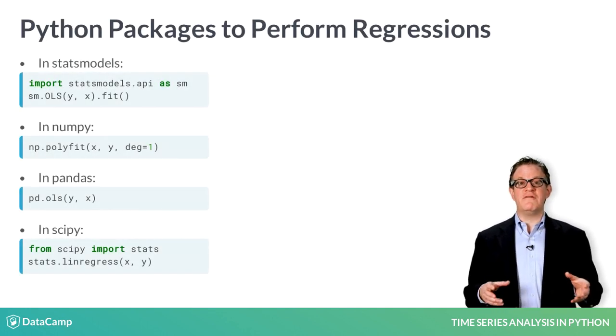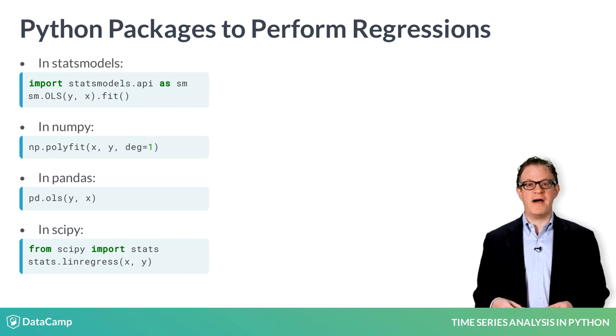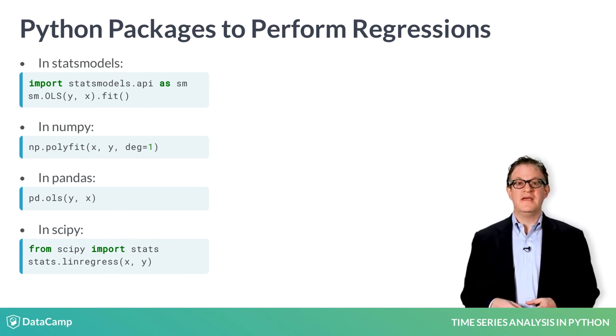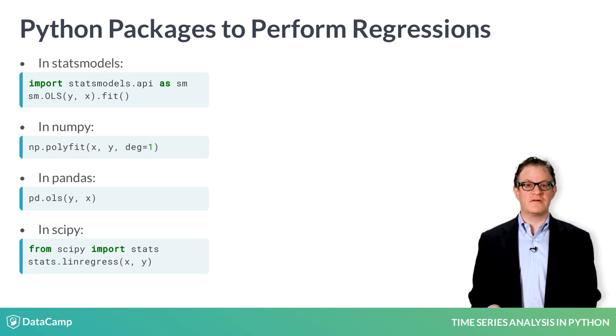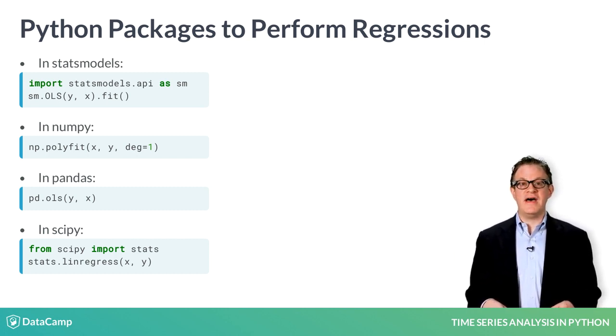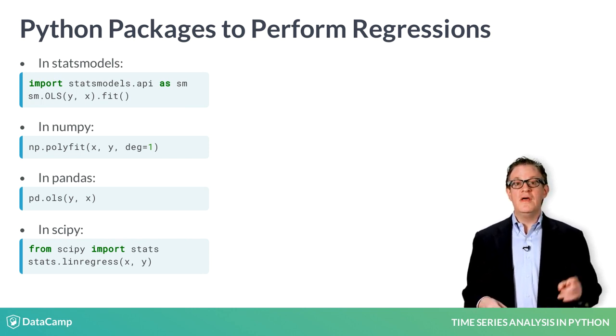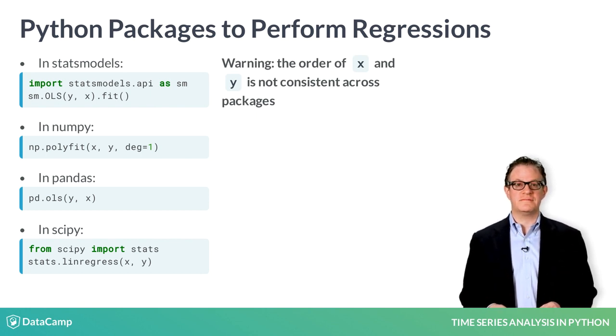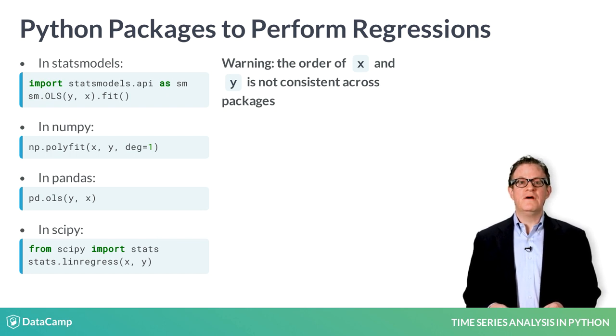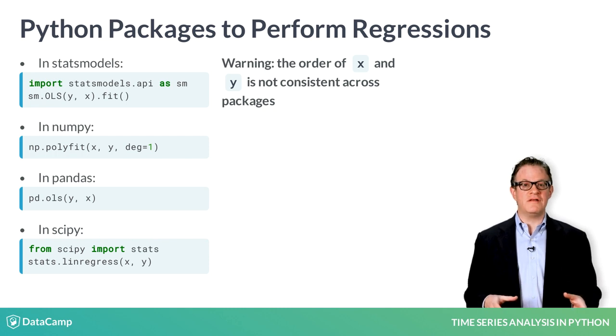Regression techniques are very common, and therefore there are many packages in Python that can be used. In statsmodels, there is OLS. In NumPy, there is polyfit, and if you set degree equal 1, it fits the data to a line, which is a linear regression. Pandas has an OLS method, and SciPy has a linear regression function. Beware that the order of x and y is not consistent across packages. All these packages are very similar, and in this course, you will use the statsmodels OLS.